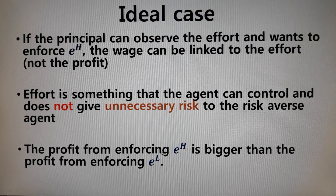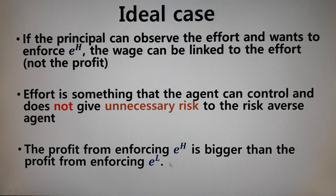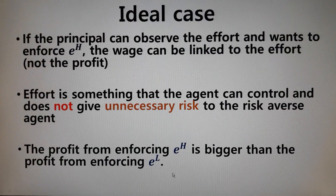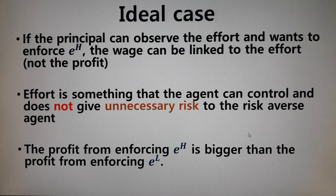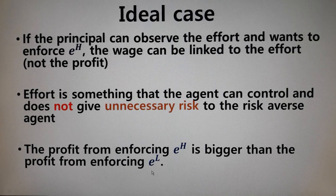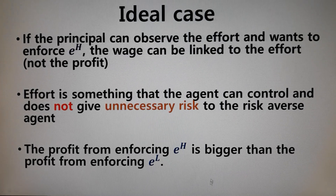This is backward induction. The principal thinks: what if I enforce EH? What if I enforce EL? He ends up enforcing EH because that gives him 4.75 million, which is bigger than 3.59 million for low effort. So he chooses EH, setting W1, W2, W3 at 1 million. EH would be the equilibrium path; EL would be the non-equilibrium path. By backward induction, the principal calculates both cases and realizes the payoff from enforcing EH is 4.75 million versus EL at 3.59 million, so he chooses EH. That's why we call it sub-game perfect equilibrium.